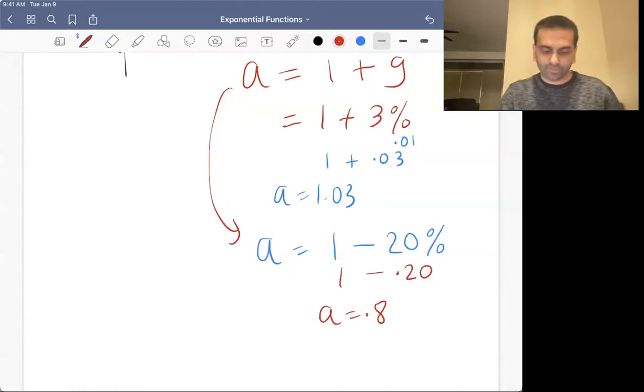So in that case, the answer would have been Y equals that initial value, and then A, which is now 0.8 to the X. So that's how you'd get that.